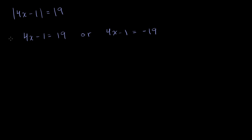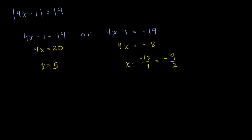Adding 1 to both sides of both equations simultaneously: you get 4x equal to 20, or 4x equal to negative 18. Dividing both sides by 4: x is equal to 5, or x is equal to negative 18 over 4, which equals negative 9 halves. Both of these x values satisfy the equation. Negative 9 halves times 4 becomes negative 18, minus 1 is negative 19, take the absolute value, you get 19. And 4 times 5 is 20, minus 1 is positive 19, take the absolute value, you get 19.